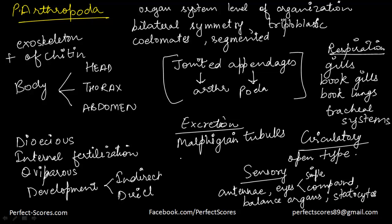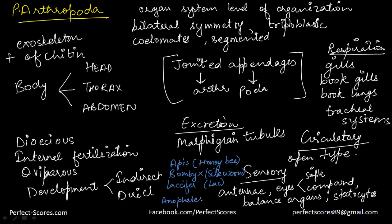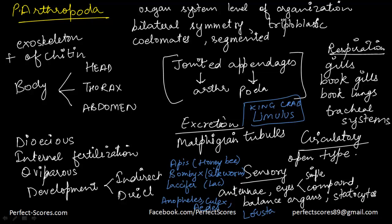Some examples are the honey bee Apis, the silkworm Bombyx which is economically important, and Laccifer the lac insect. There are also many disease vectors such as Anopheles, Culex, and Aedes — all mosquitoes. The king crab Limulus is a living fossil in this phylum. Locusta, the locust, is also part of this phylum and is a very destructive insect.